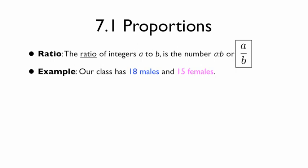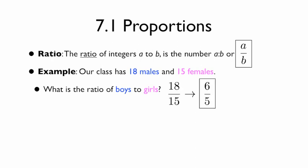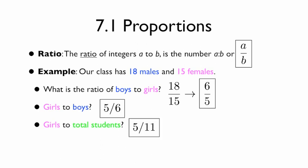For example, let's say our class had 18 males and 15 females. The ratio of boys to girls would be 18 over 15, which reduces to 6 to 5. If we turn that around and said what's the ratio of girls to boys, that would be 5 to 6. And if we asked for the ratio of girls to total students, that would be 5 to 11.